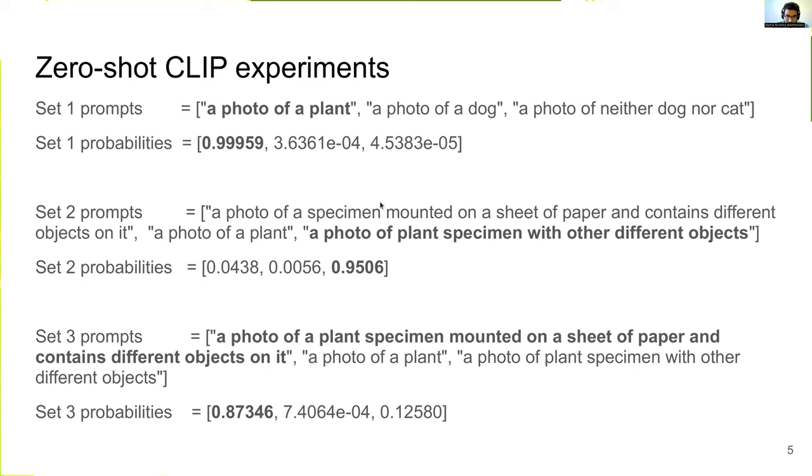But by changing the specimen here to plant specimen, the model predicts the first prompt is the more suitable prompt with 87.3% confidence, as we can see in the third experiment.